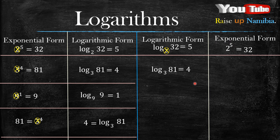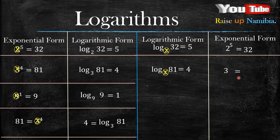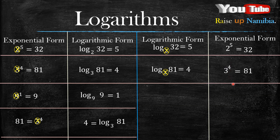Second example: you have the log of 81 to the base 3. To change this into exponential form, always check your base first — your base is 3. Write down your 3, then your equal sign. After writing your equal sign, ignore the base 3 because you already wrote it. Swap the two: 81 was on the left-hand side so we write it on the right-hand side. Now 4 was on the right-hand side, but because there is already a 3 there which is our base, we write 4 as an exponent.